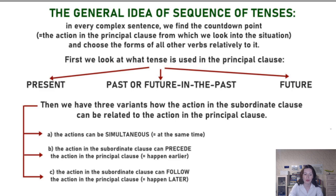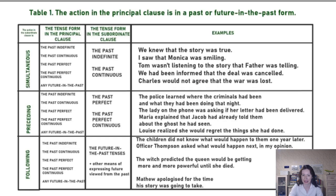Now we are going to have a look at the tables — there will be three tables. You have the present, past, the future, and the past and future. Let's look at each of them separately. This is going to be our first table.